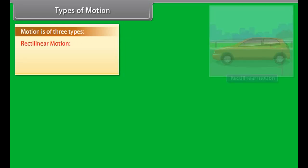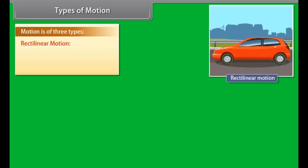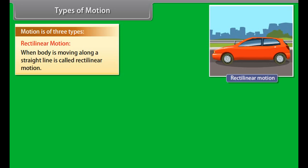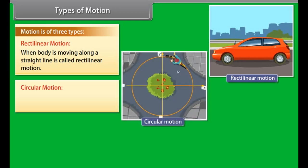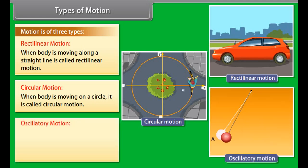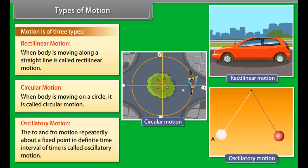Types of motion: Motion is of three types. One, rectilinear motion — when a body moves along a straight line, it is called rectilinear motion. Two, circular motion — when a body moves on a circle, it is called circular motion. Three, oscillatory motion — the to-and-fro motion repeatedly about a fixed point for an indefinite interval of time is called oscillatory motion.